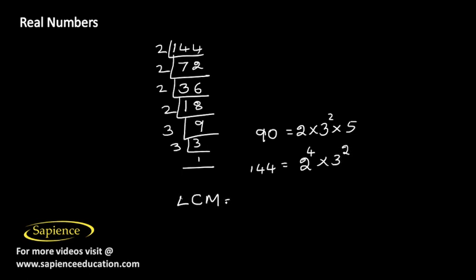For LCM we need to write down all the prime factors available. We have 2, 3, and 5. We need to choose the highest power of each prime factor: for 2 it is 4, for 3 it is 2, and for 5 it is 1.